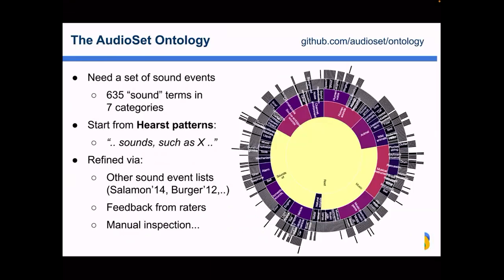We really wanted the output labels to describe sounds that people hear. We were inspired by ImageNet, which used a thousand object names and a thousand images per class. We wanted something similar for sound — around a thousand sound event names — but no existing list existed. So we had to generate the Audio Set Ontology from scratch: basically a hierarchy of sound events, generated largely by hand, with around 600 different event classes.